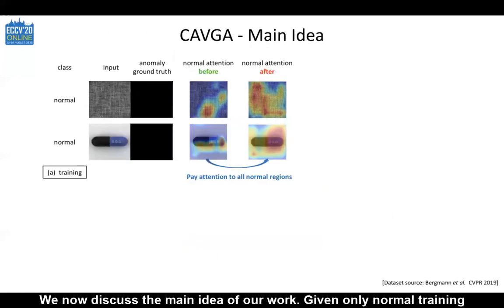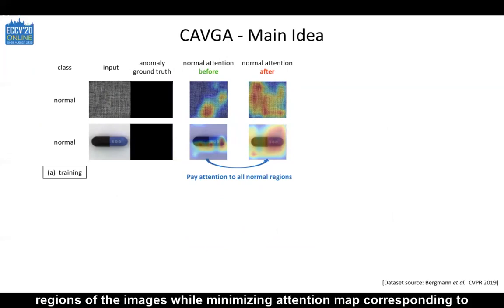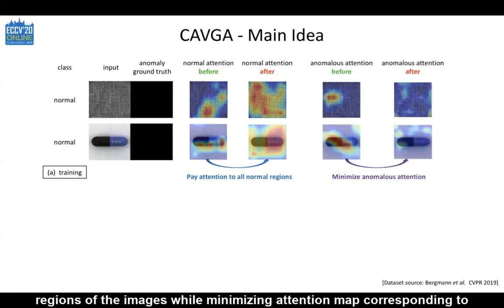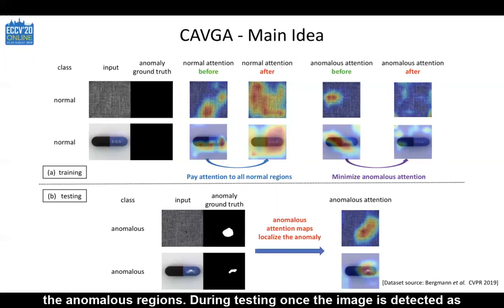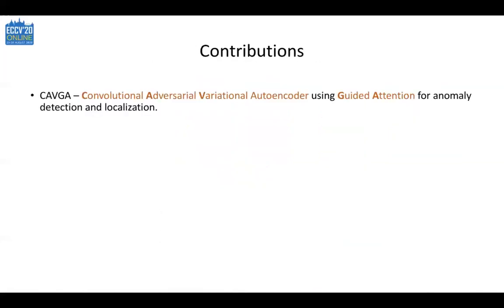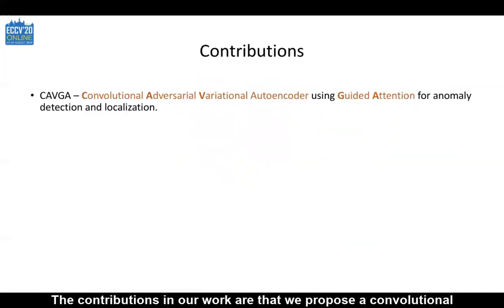We now discuss the main idea of our work. Given only normal training images, we encourage the attention map to focus on all the normal regions of the images, while minimizing the attention map corresponding to the anomalous regions. During testing, once the image is detected as anomalous, the anomalous attention map localizes the anomaly in the image.